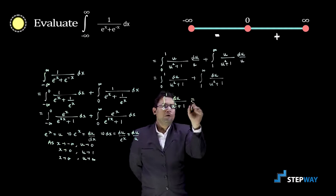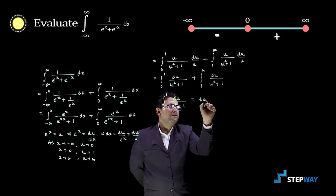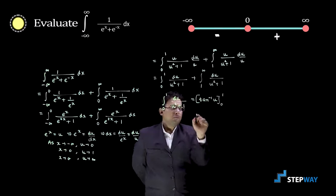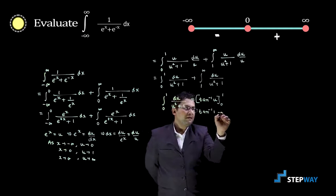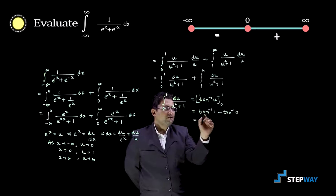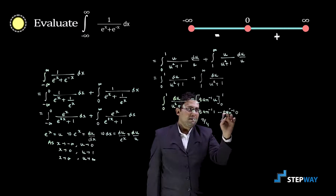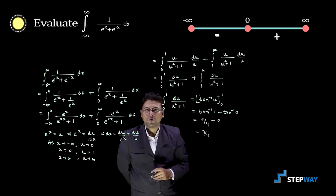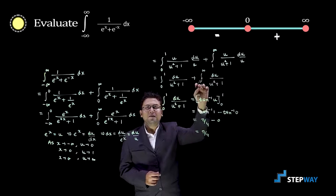First we evaluate the proper integral: integration from 0 to 1 of du upon u squared plus 1. The antiderivative of 1 over u squared plus 1 is tan inverse u, with limits 0 to 1. Putting u equal to 1 gives tan inverse 1, which is pi by 4 (since tan of pi by 4 is 1). Putting u equal to 0 gives tan inverse 0, which is 0. So the first term equals pi by 4 minus 0, which is pi by 4.